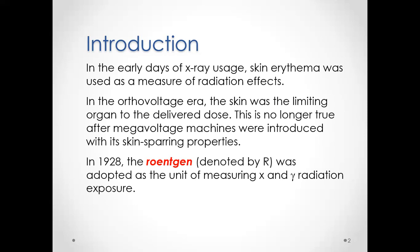In the orthovoltage era, the skin was the limiting organ to the delivered dose. If you kept aiming the beam at somebody and the skin was being destroyed, you had a major problem — you were trying to figure out exactly how much you could deliver without destroying the skin in the way. Nowadays this is no longer true; we have more powerful accelerators, and we'll get into why skin sparing happens with megavoltage energies a little bit later.